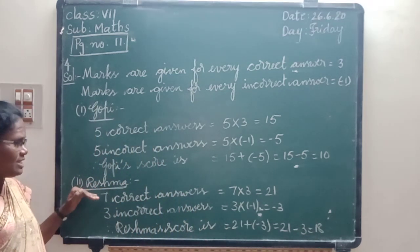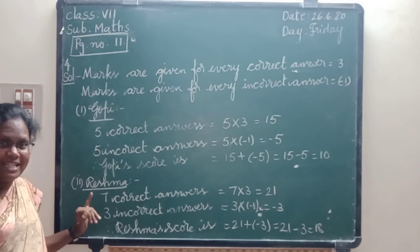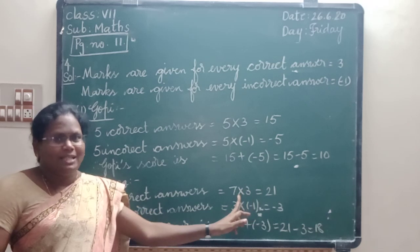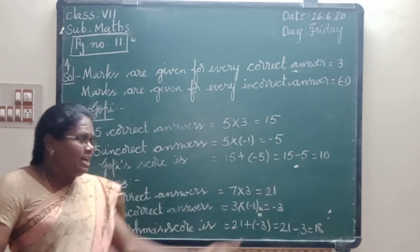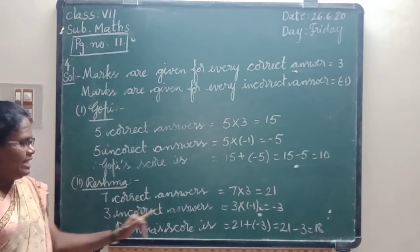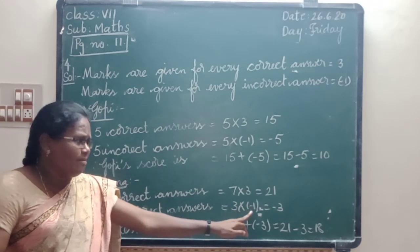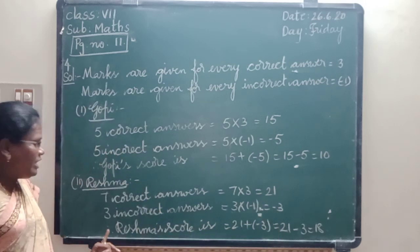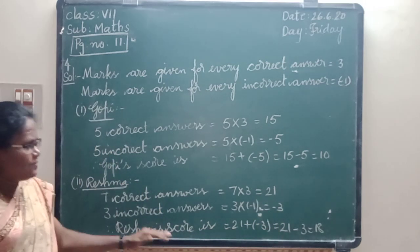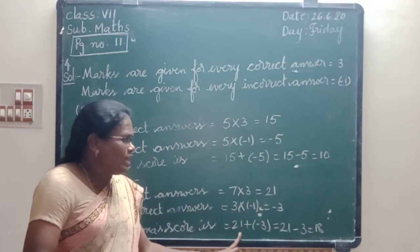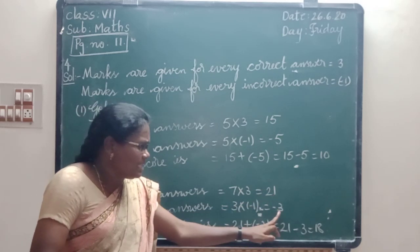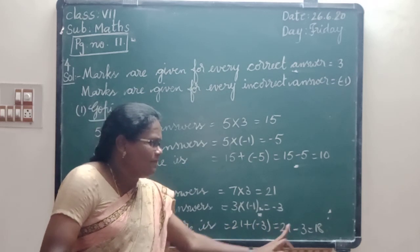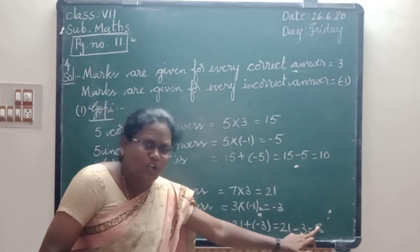Once again, listen to Reshma's score. How many correct answers? 7 correct answers. 7 into 3 equals 21. How many incorrect answers? 3 incorrect answers. 3 into minus 1 equals minus 3. Plus into minus is minus. Reshma's score is 21 plus minus 3, which equals 21 minus 3, equal to 18.